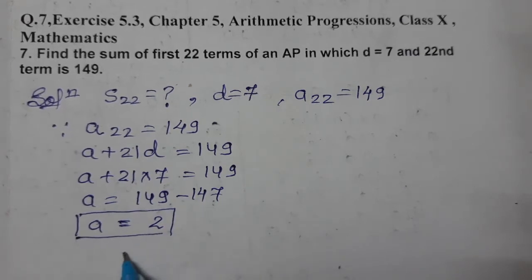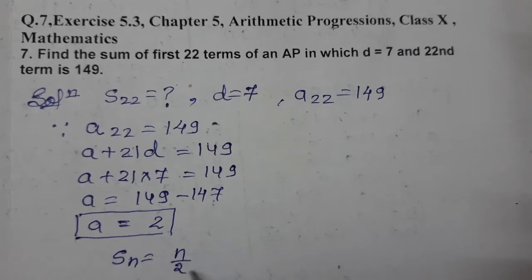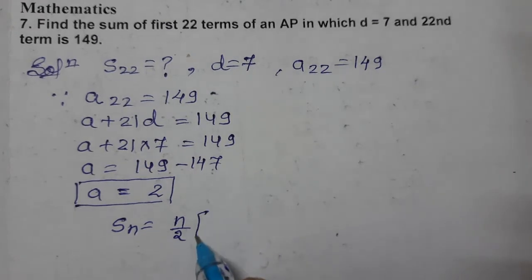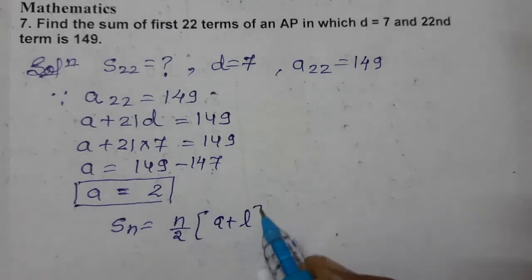To find S₂₂, the formula for Sₙ is n/2 times (a + l). This is the formula when first and last terms are given.